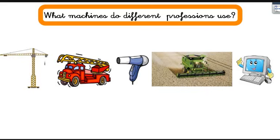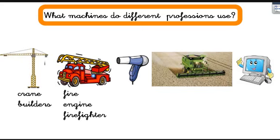We also need to ask: what machines do different professions use? For example, this big thing is a crane, used by builders to build big tall buildings. These are the fire engines we've seen before, and firefighters use them. And who uses a hair dryer professionally in their work? Of course, the hairdresser.